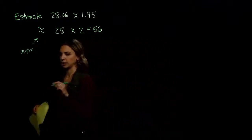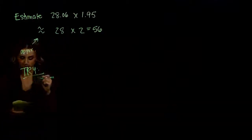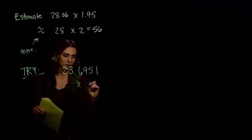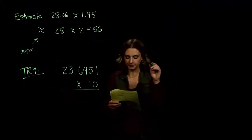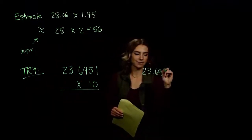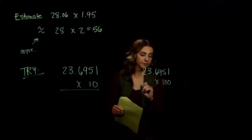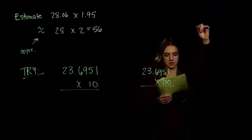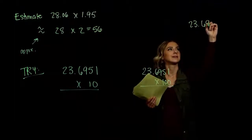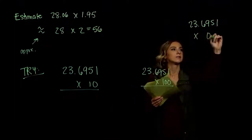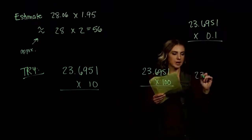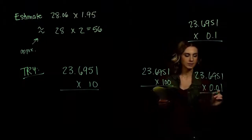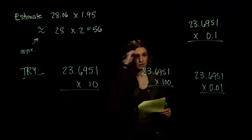I've got a few for you to practice with. Multiply 23.6951 by 10. Then take that same value, 23.6951, and multiply it by 100. And two more: 23.6951 times 0.1, and 23.6951 times 0.01. Take each of those and practice the multiplication — see what you get.